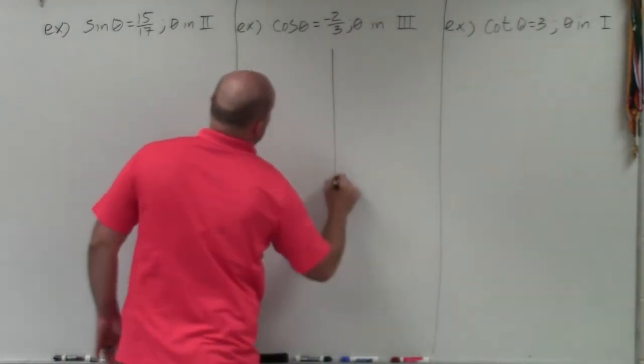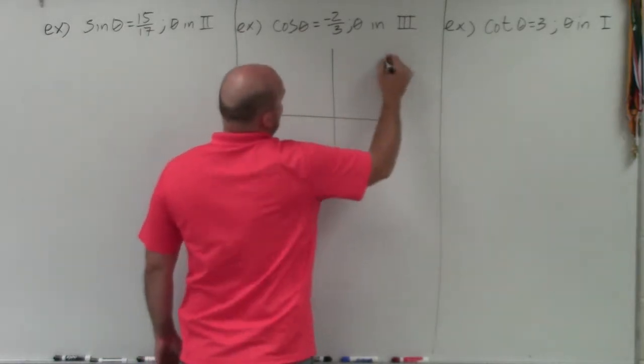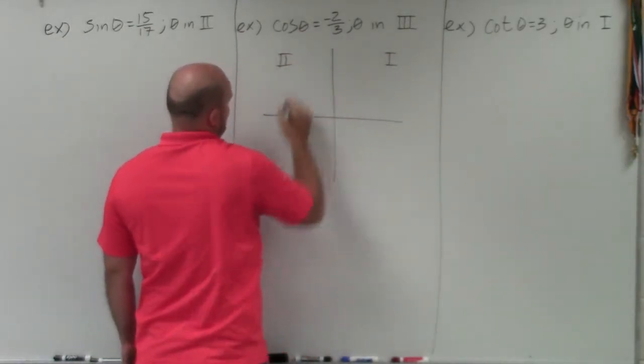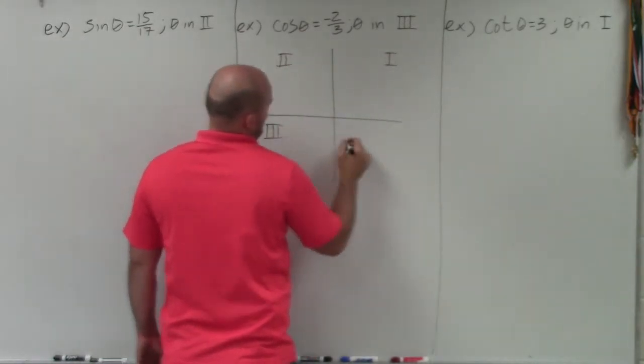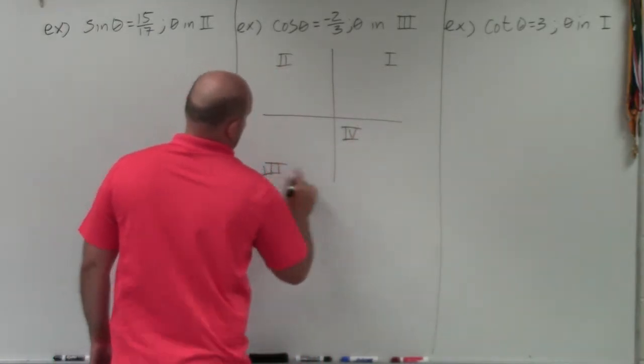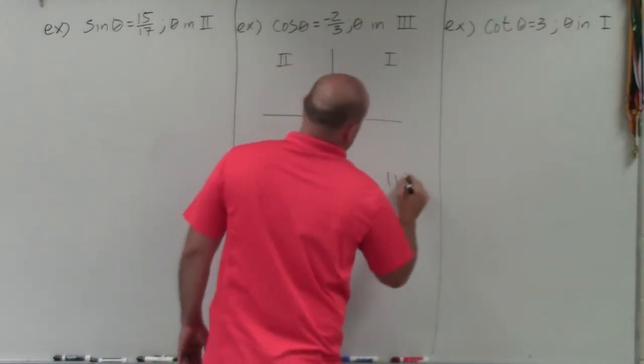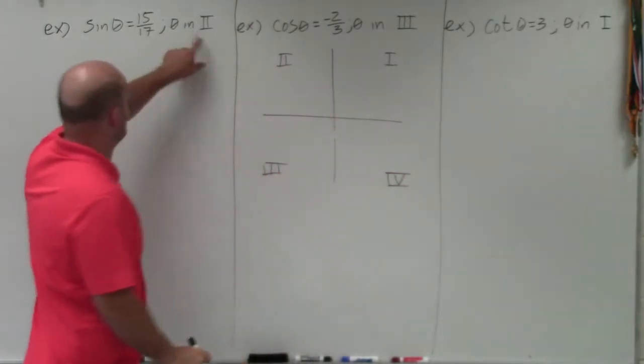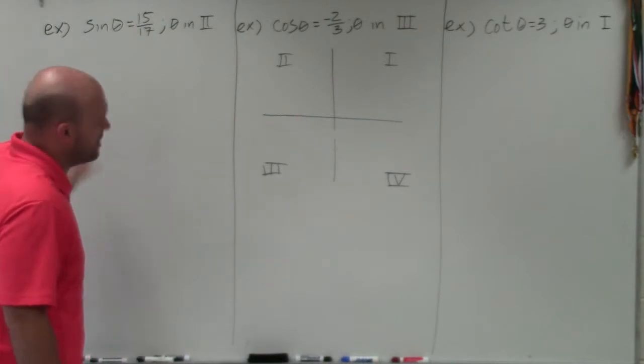So first thing is, when you're dealing with constraints, we have four quadrants, right? I guess I should just do all this outside. So our constraint says our angle has to be in quadrant two.